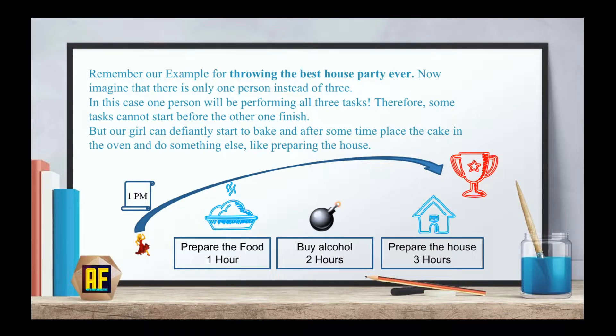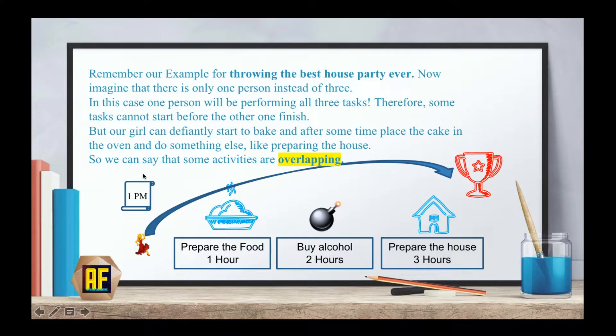But our girl can definitely start to bake and after some time place the cake in the oven and do something else like preparing the house. Therefore, we can do two activities at the same time. It is just a matter of managing our time properly. So we can say that some activities are overlapping.